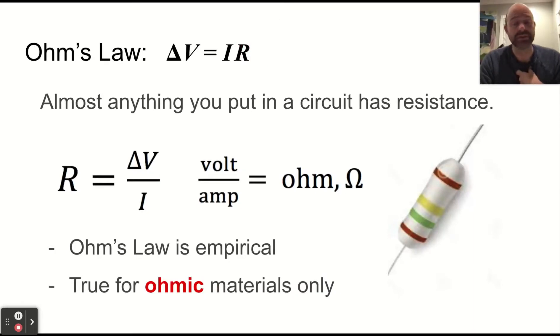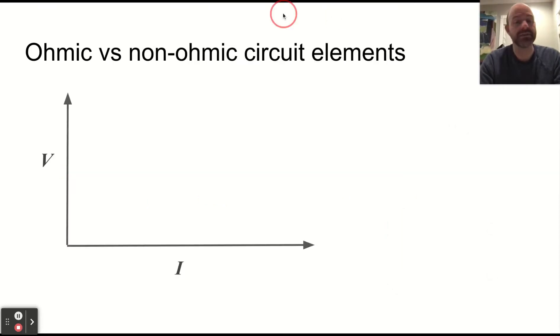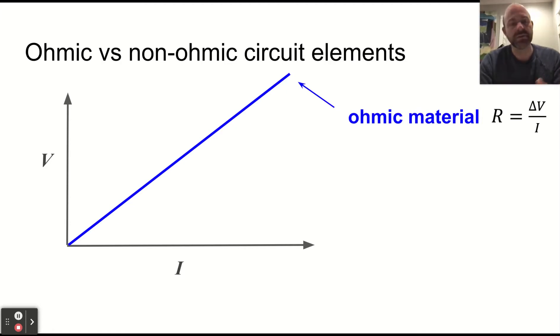Anything you put in a circuit has resistance. However, things that don't do anything else other than have resistance are things we call resistors. And Ohm's law is empirical. That means we observe it, we see how it works. It's only true for materials that are ohmic. That's a little bit circular. But basically what that means is if a circuit element has a linear relationship between voltage and current, we call that ohmic. The resistance is just the ratio of voltage to current, and it's constant throughout.